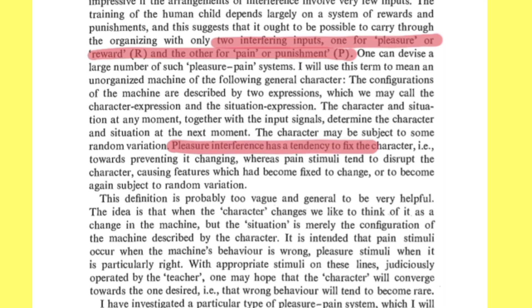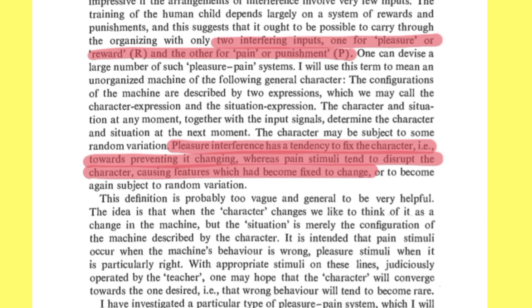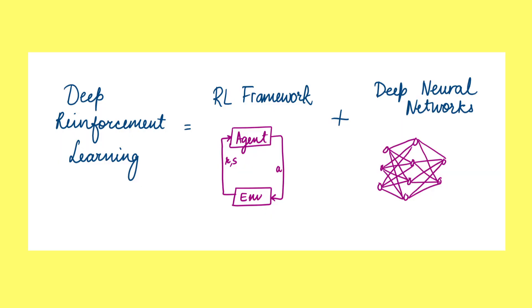Of course, they weren't the first ones either. Mentions of similar ideas can be found in Alan Turing's writings dating back to the 1940s. So why then the current hype in the field? The recent developments in deep learning have helped establish the field of deep reinforcement learning. As the name suggests, it combines the RL framework with deep neural networks to push for progress in the field, leading to the current string of successes we have seen in the past decade.